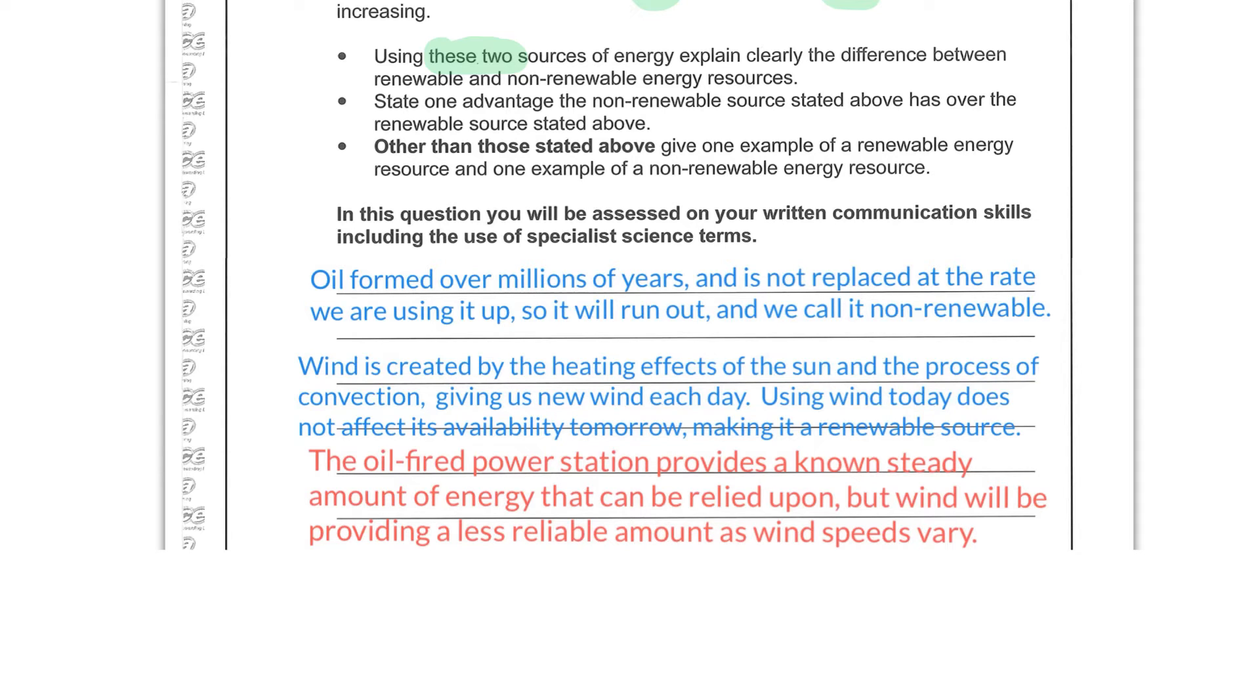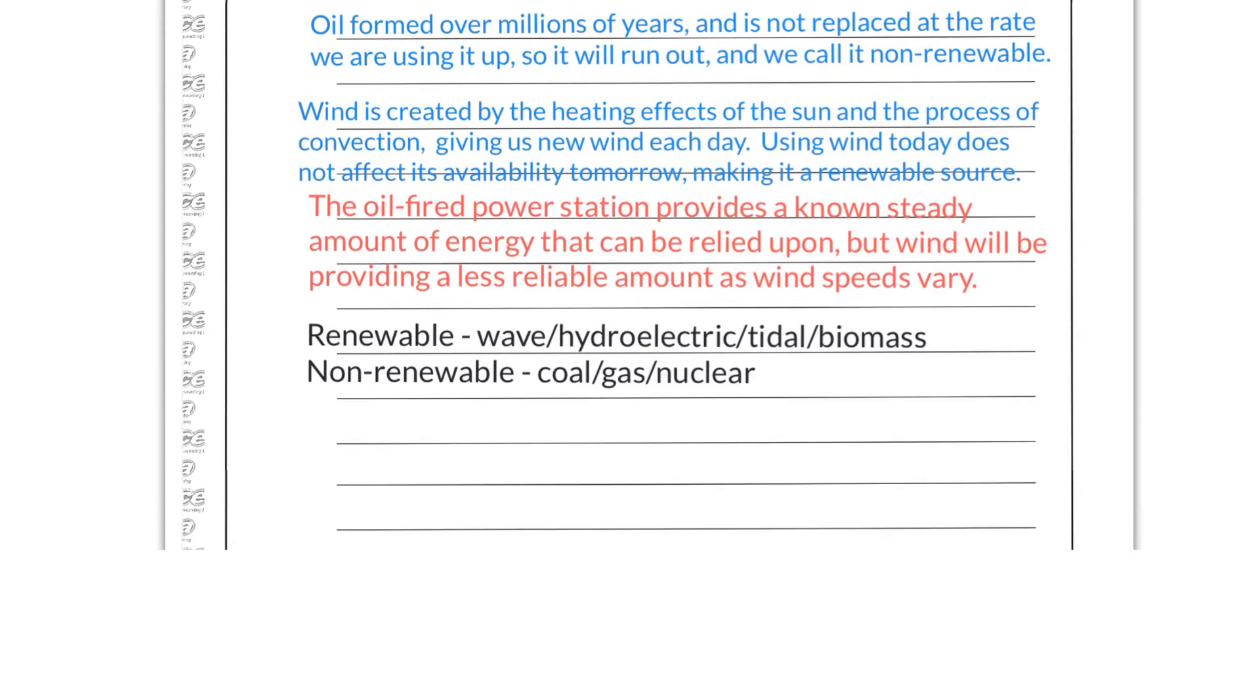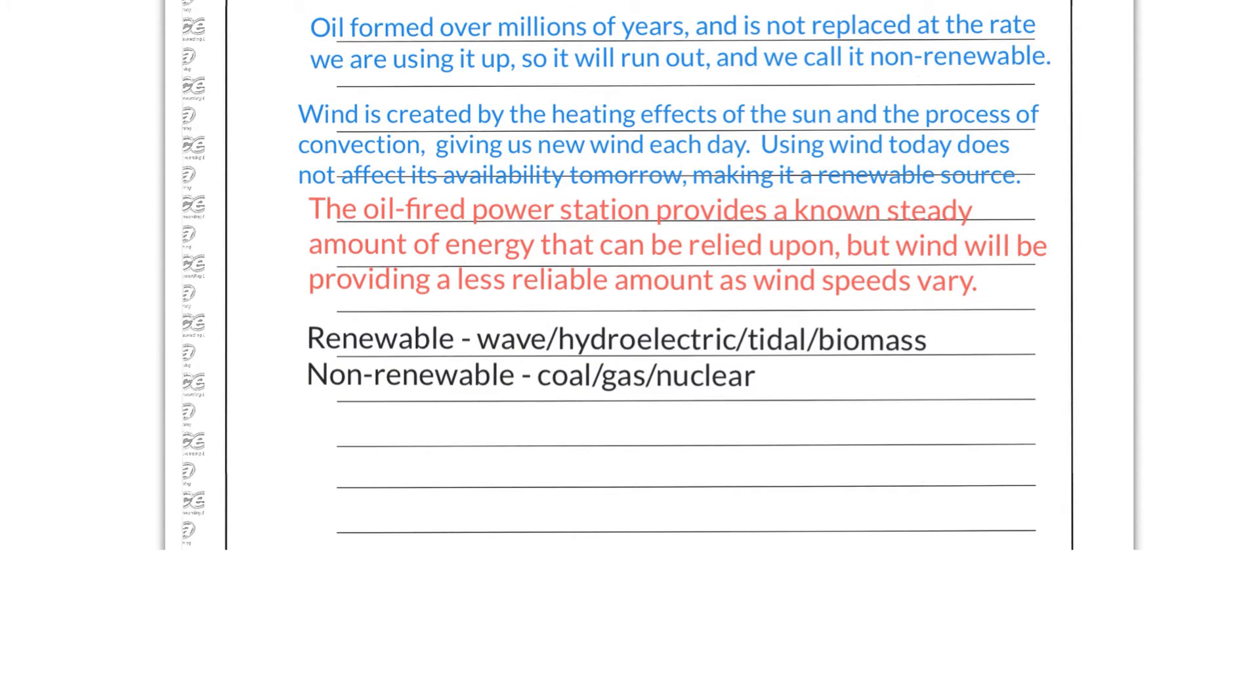Other than those stated above, give one example of a renewable energy resource and one example of a non-renewable energy resource. Well, this is the easiest because it's just going to be stating stuff from your notes. So for renewable, you could put wave, hydroelectric, tidal, biomass, etc. And for non-renewable, you could put coal, gas, nuclear, etc.